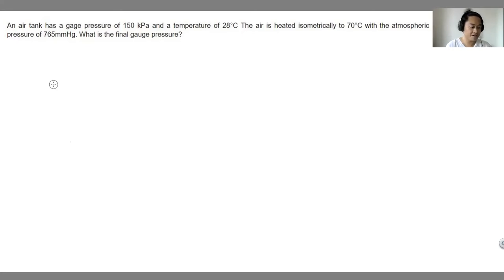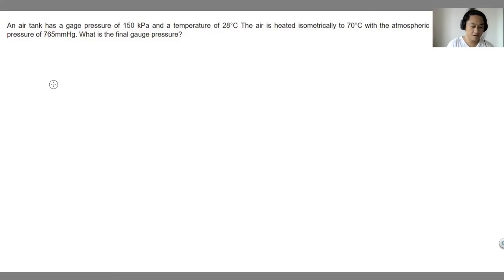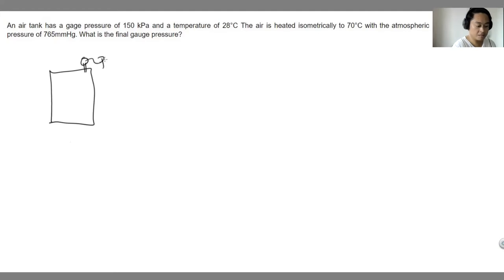An air tank has a gauge pressure of 150 kilopascals and a temperature of 28 degrees Celsius. The air is heated isometrically to 70 degrees Celsius with the atmospheric pressure of 765 millimeters of mercury (mmHg). Let's draw our schematic diagram first. This is our tank, with a gauge pressure of 150 kilopascals and a temperature T1 of 28 degrees Celsius.